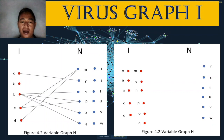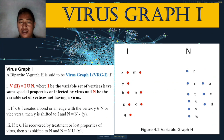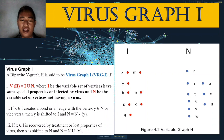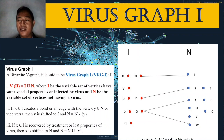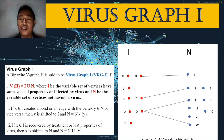For property three: if x in I is recovered by treatment or loses the properties of the virus, then x is shifted to N. In the next figure, we can see that a, c, and d are transferred to set N — therefore they have recovered from the virus. Then, if the vertices in I again infect other vertices in N, r, s, t, and w will transfer to set I, and the process continues.